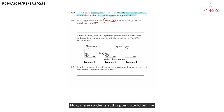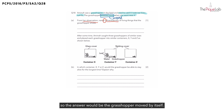Now many students at this point would tell me that since the grasshopper hopped away, this shows that the grasshopper moved. So the answer would be: the grasshopper moved by itself. But is that the focus of the question?